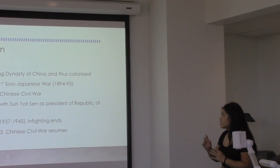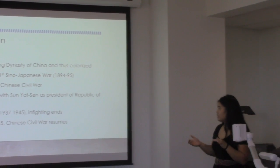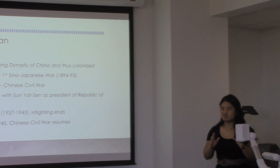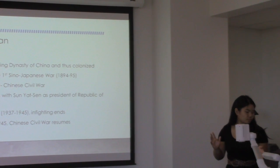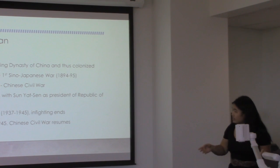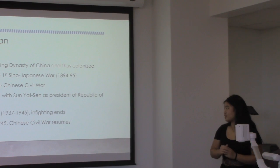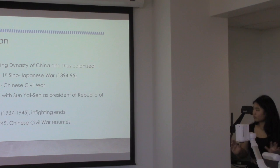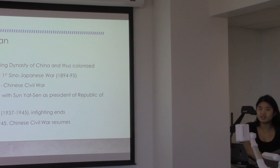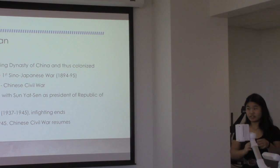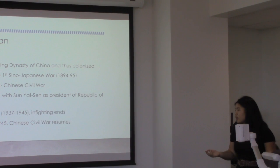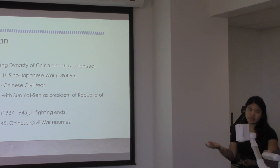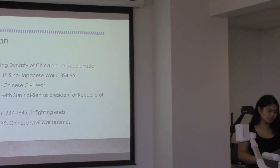The KMT emerged with Sun Yat-sen as president and founder of the Republic of China in 1912, but there was still a lot of infighting. China would not be unified until much later because of the Second Sino-Japanese War, which began in 1937 — what we know as World War II on the Asian front. The two groups actually ceased fighting each other to defeat Japan, and as World War II ended, the Chinese Civil War resumed.